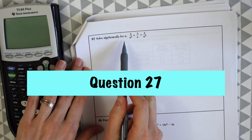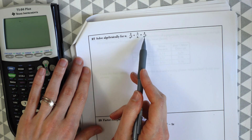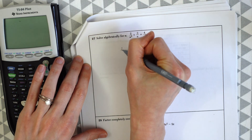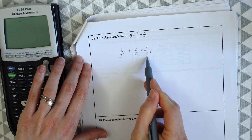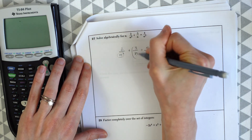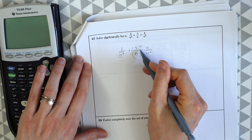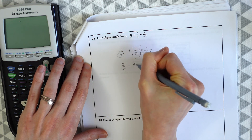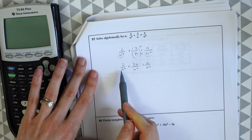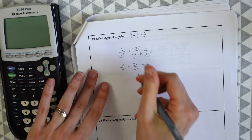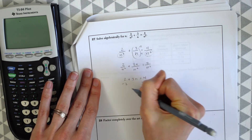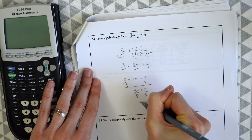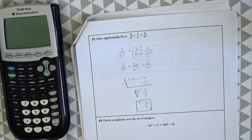Question 27. Solve algebraically for n. We have 2 over n squared plus 3 over n equals 4 over n squared. Looking at our denominators, two of them match but 3 over n doesn't. So we're going to multiply the numerator and denominator of 3 over n by n. Now that they all have matching denominators, we can get rid of all the denominators. We're left with 2 plus 3n equals 4, and we solve for n like normal. We get n is equal to 2 thirds. You can always double check the answer on the calculator.